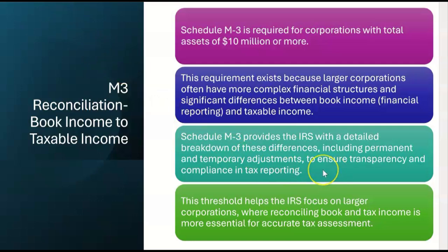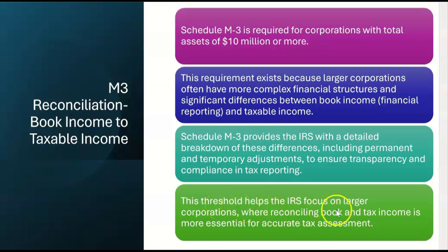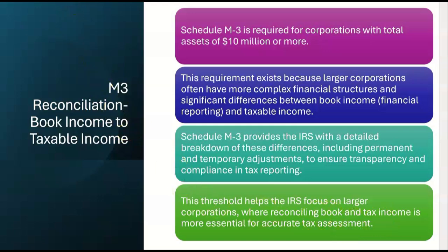With M-1, it was enough to say that this was a difference between book income and taxable income. But for M-3, you've got to tell the IRS if this is a temporary difference or a permanent difference. The $10 million threshold of assets helps the IRS focus on larger corporations where reconciling book and taxable income is more essential for accurate tax assessment.